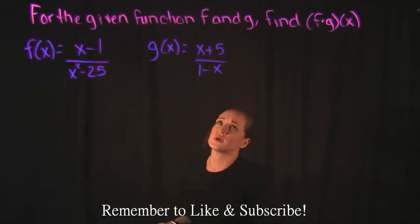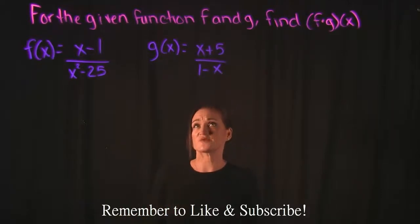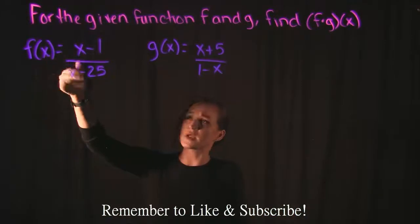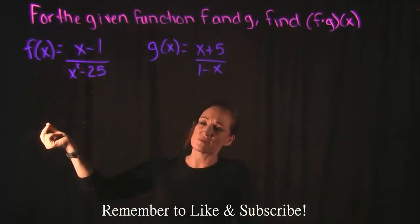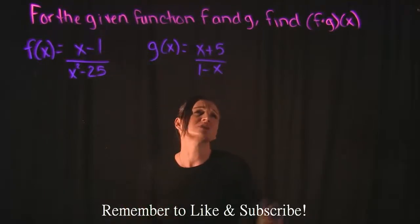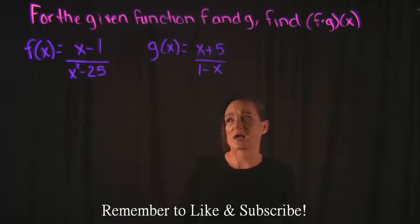For this video, what we're going to do is we're going to find f times g of x. It says for the given functions f and g, so we have f of x is equal to x minus 1 over x squared minus 25. We have g of x is equal to x plus 5 over 1 minus x, and it wants us to find f times g of x.